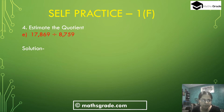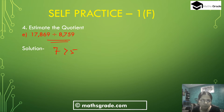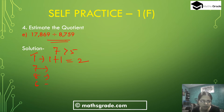Question number 4e: 17869 divided by 8759. First, we try rounding 17869 to the nearest 10,000. When rounding to the nearest 10,000, look at the thousands digit. The thousands digit is 7, which is more than 5, so add 1 to the ten-thousands digit. The ten-thousands digit 1 changes to 2, and all lower digits change to 0. So 17869 rounded to the nearest 10,000 is 20,000.